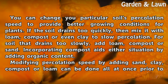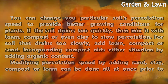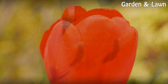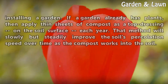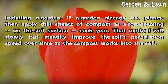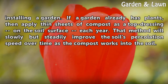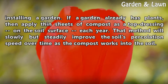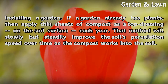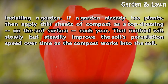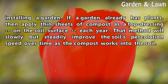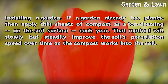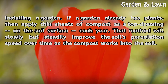Modifying percolation speed by adding sand, clay, compost, or loam can be done all at once prior to installing a garden. If a garden already has plants, then apply thin sheets of compost as a top dressing on the soil surface each year. That method will slowly but steadily improve the soil's percolation speed over time as the compost works into the soil.